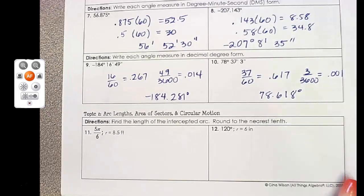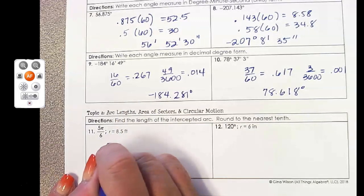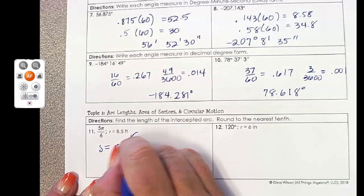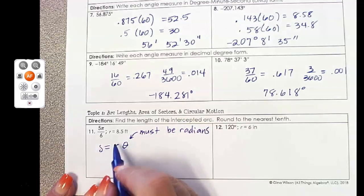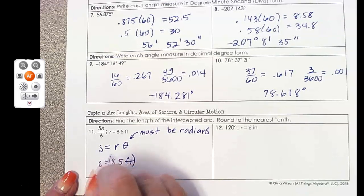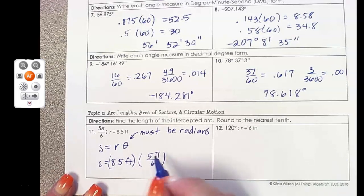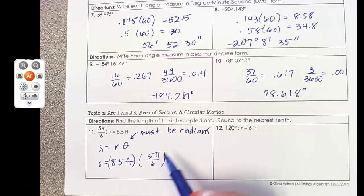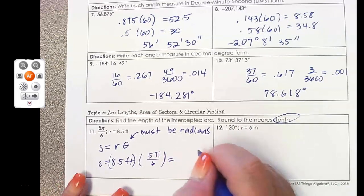So arc length. We have a formula for this, and we're trying to find the arc length S, and S is equal to Rθ, and the θ must be in radians. Our R is given. That is 8.5 feet, and our θ is already in radians. So multiplying these two things together, and we're going to put the π into our calculator, and then round to the nearest tenth, according to the directions, we get 22.3 feet.